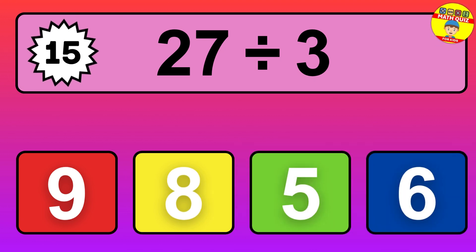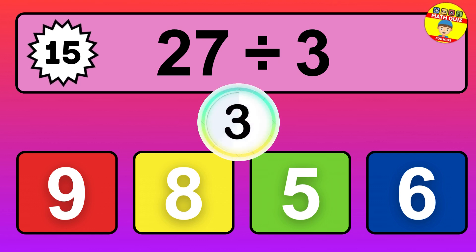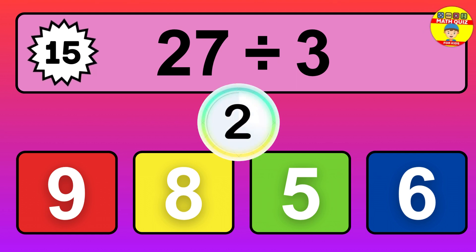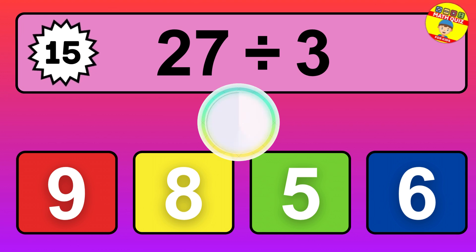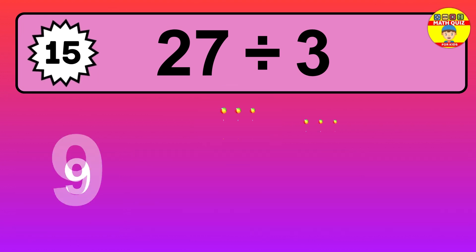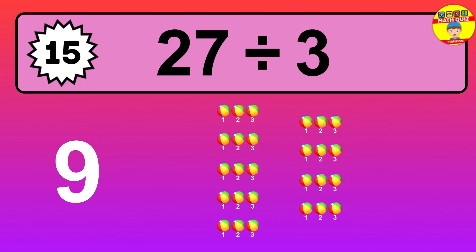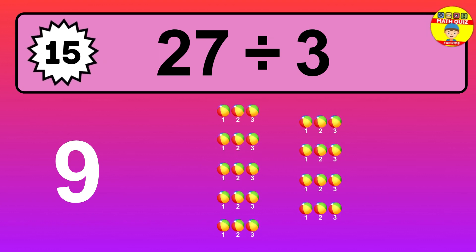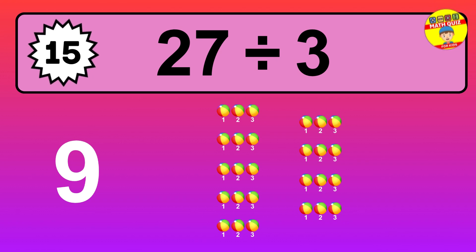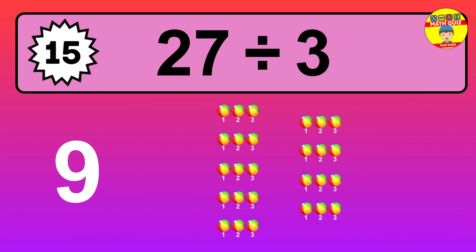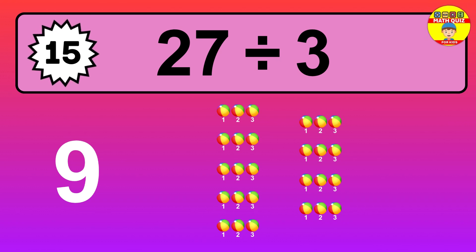27 divided by 3 is... time to think. Let's go to the solution. Divide the number 27 by 3. Each group contains 3 units, so dividing 27 by 3 results in 9 equal groups. Thus, the result is: 27 divided by 3 equals 9.